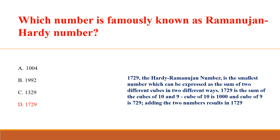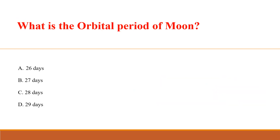1729, the Hardy-Ramanujan number, is the smallest number which can be expressed as the sum of two different cubes in two different ways. 1729 is the sum of the cubes of 10 and 9: cube of 10 is 1000, and cube of 9 is 729; adding the two numbers results in 1729.